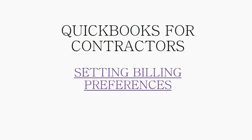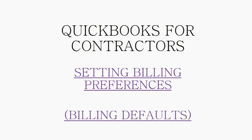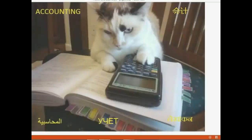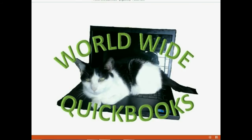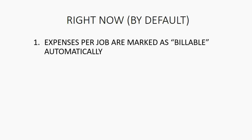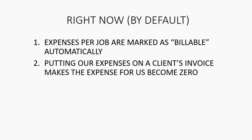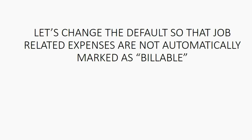We will learn how to set the billing preferences, also called the billing defaults. By default, expenses per job are marked as both billable automatically, and putting our expenses on a client's invoice makes the expense for us become zero. Let's change the default so that job-related expenses are not automatically marked as billable.